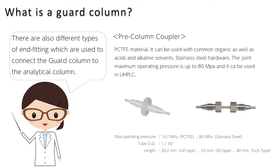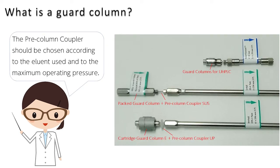There are also different types of end fittings which are used to connect the guard column to the analytical column. The pre-column coupler should be chosen according to the eluent used and the maximum operating pressure.